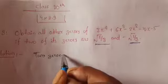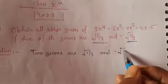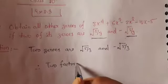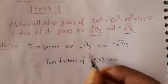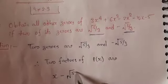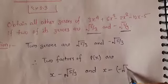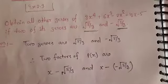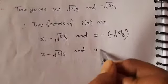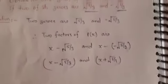The two zeros are √5/3 and −√5/3. Therefore the two factors of the polynomial are: the first factor is (x − √5/3) and the second factor is (x + √5/3), because minus times minus becomes plus. These are the two factors of the given polynomial.